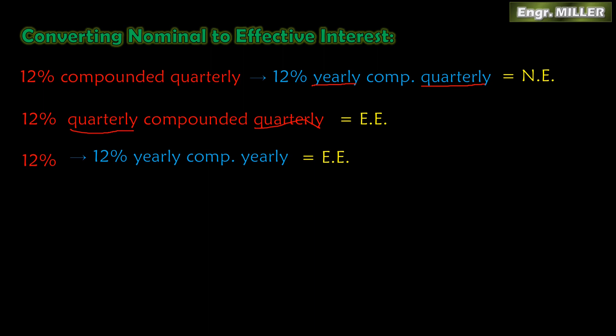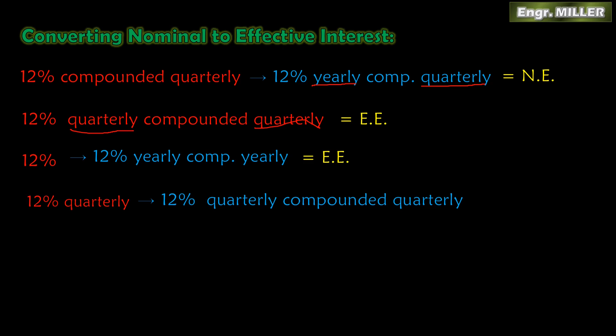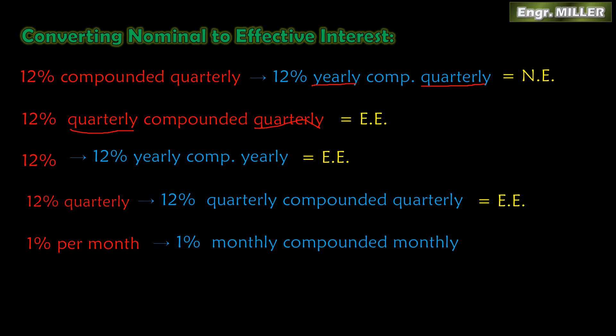'12% quarterly compounded quarterly' has matching beginning and end, so it is effective. '12%' with nothing else stated means '12% yearly compounded yearly' — both yearly, so effective. '1% per month' means '1% monthly compounded monthly' — same, so effective. '12% quarterly' alone means '12% quarterly compounded quarterly' — also effective. Check every format carefully.